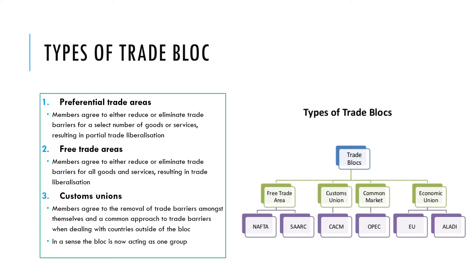The next type is a customs union, which builds on a free trade area. Tariffs on all goods and services have been removed between members, but now a common external tariff has also been applied for any non-members of that trade bloc. So there are no barriers between members but they agree to apply a tariff to non-members.